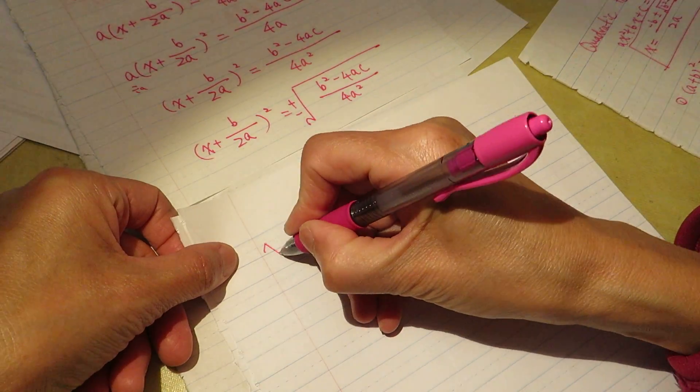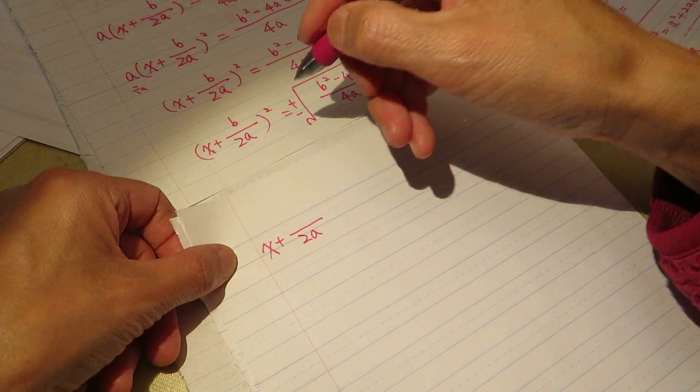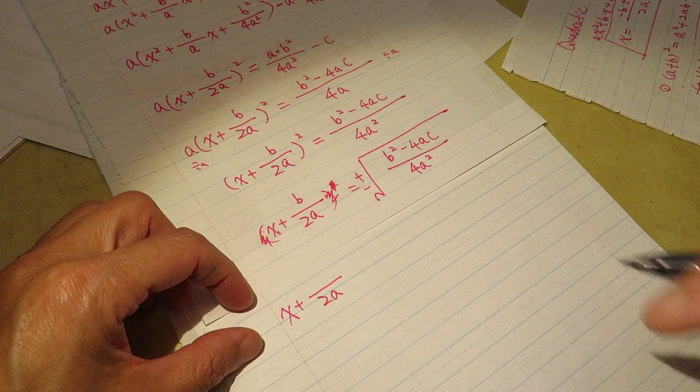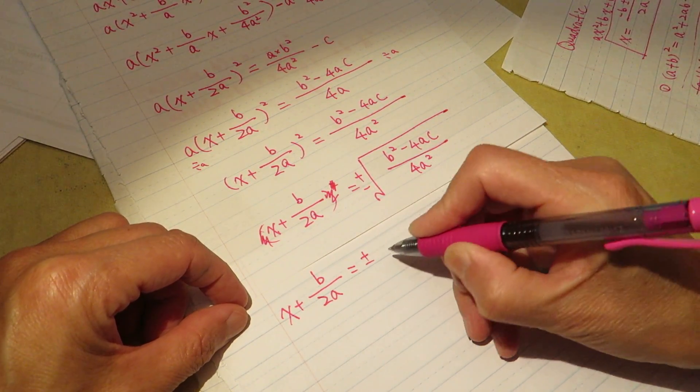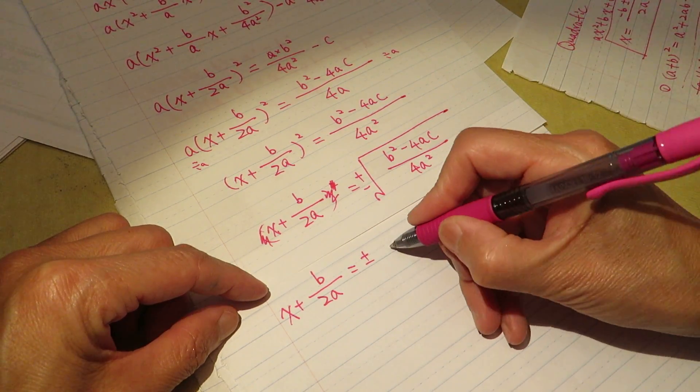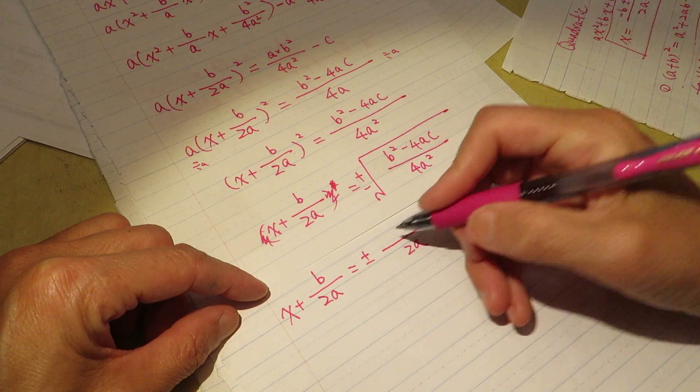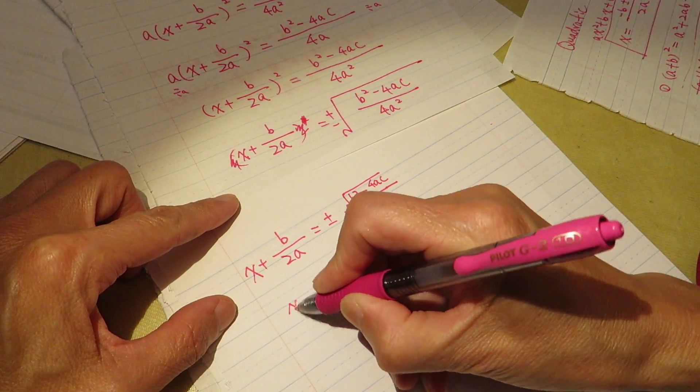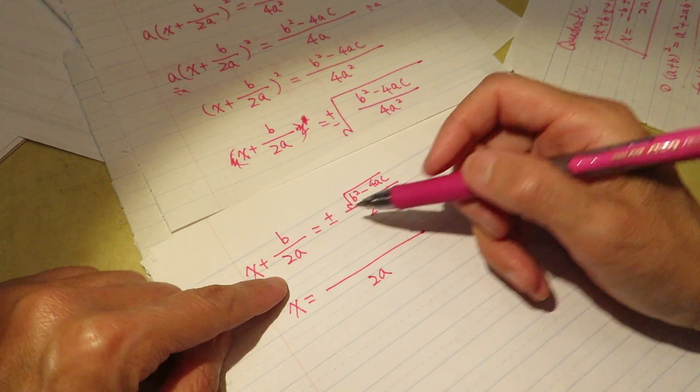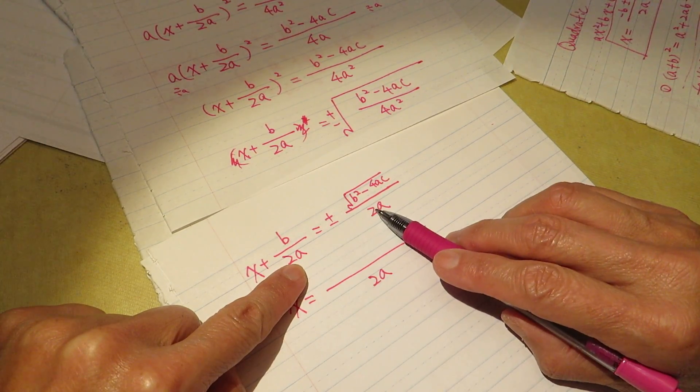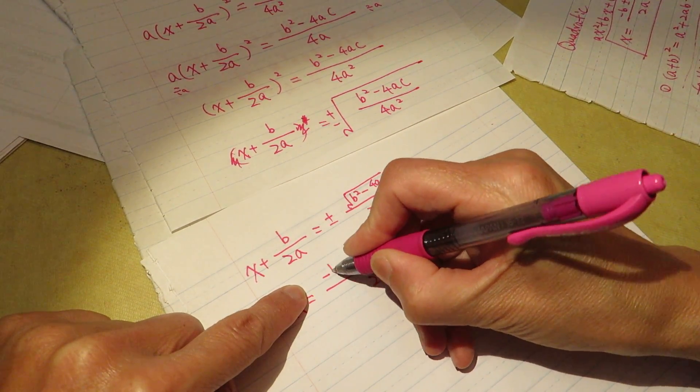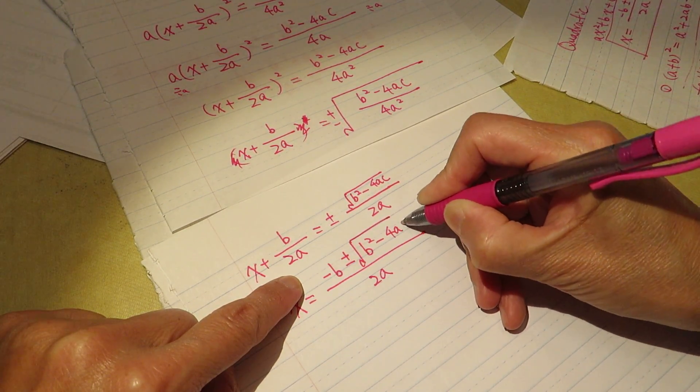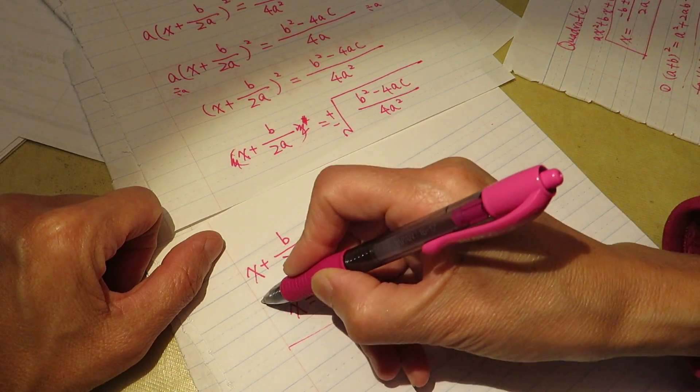Okay, keep on, x plus b/2a, and 4a² we can take it out, because b² minus 4ac, and move this one to the other side, x equals, and this one on the bottom is 2a, this one on the bottom is 2a, so b is negative b, move to this side, negative b plus minus square root of b² minus 4ac over 2a, so this is the quadratic formula.